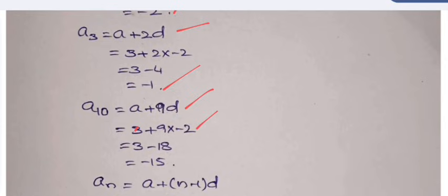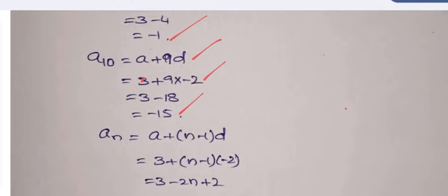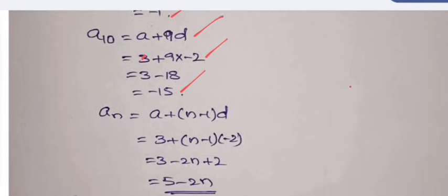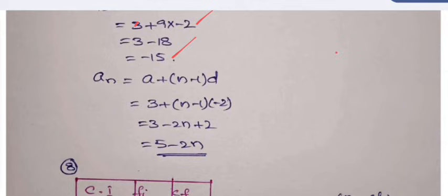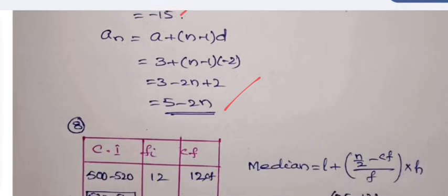And 10th term is also required. To find 10th term, a₁₀ is equal to a plus 9d. a is 3, d is minus 2. Substituting these values and calculating, a₁₀ is minus 15, it is obtained. And finally, what is the nth term? It is asked. nth term is a plus n minus 1 into d. Substituting the values of a and d, the final one we get here is 5 minus 2n, which is the nth term of the progression.